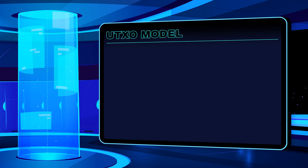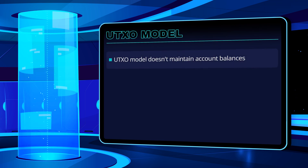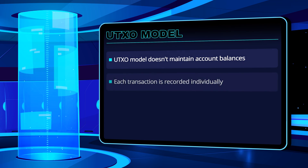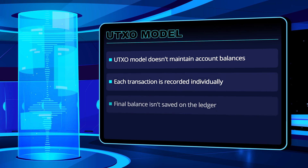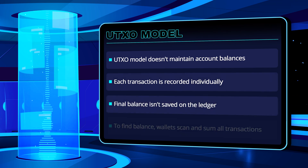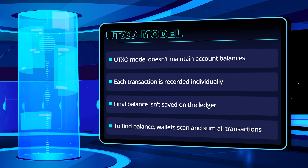If a blockchain is based on a UTXO model, you won't have an account with a balance to keep track of your transactions. Instead, each transaction is recorded individually, and there is no final balance saved on the ledger. To know your balance, your wallet scans the ledger for all transactions to your address, and adds them up.